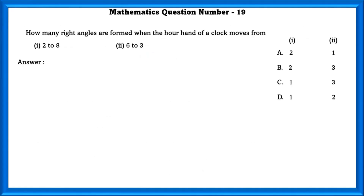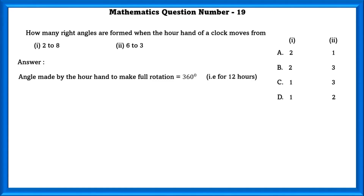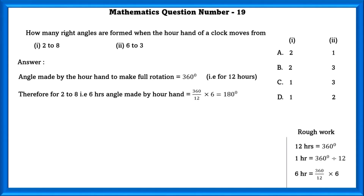Mathematics question number 19. How many right angles are formed when the hour hand of a clock moves from 2 to 8? The angle made by the hour hand for a full rotation is 360 degrees, that is for 12 hours. Therefore, from 2 to 8, that is 6 hours, the angle made is 180 degrees. In 180 degrees we have two right angles — 90 + 90 = 180 — so two right angles.